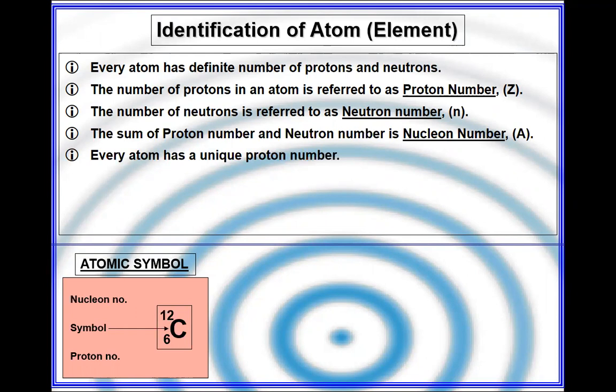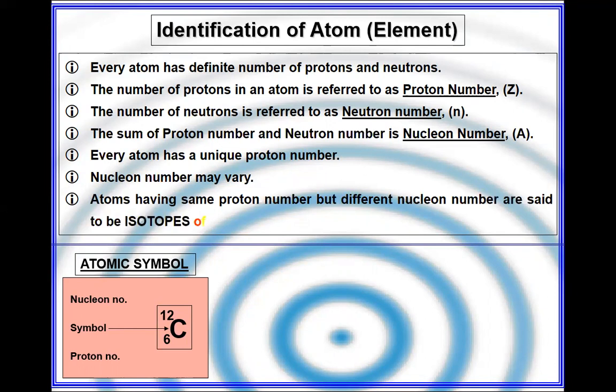Every atom has a unique proton number and every atom is different. That means its proton number is different. Nucleon number is different.